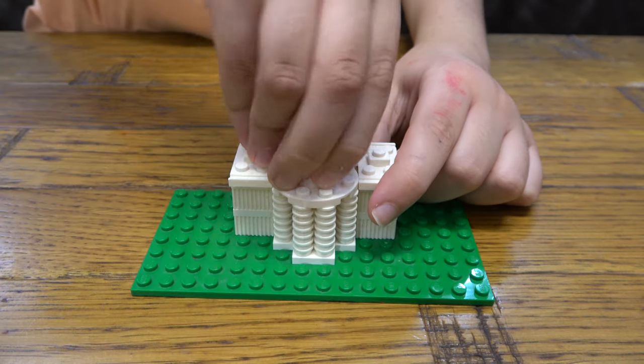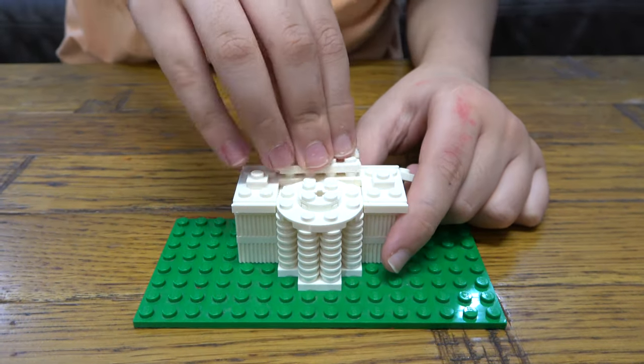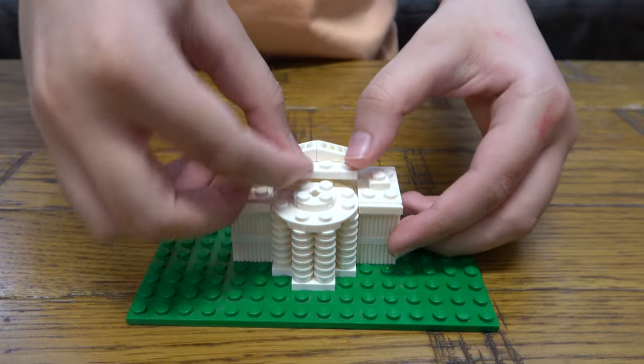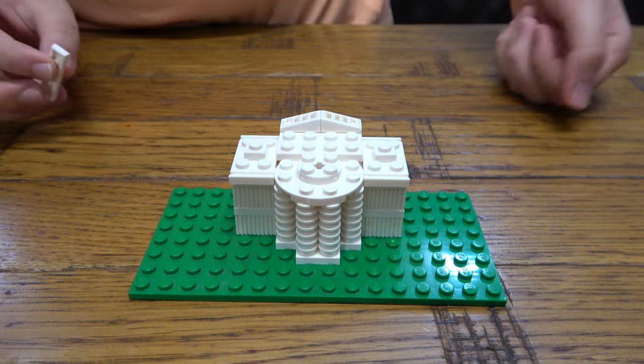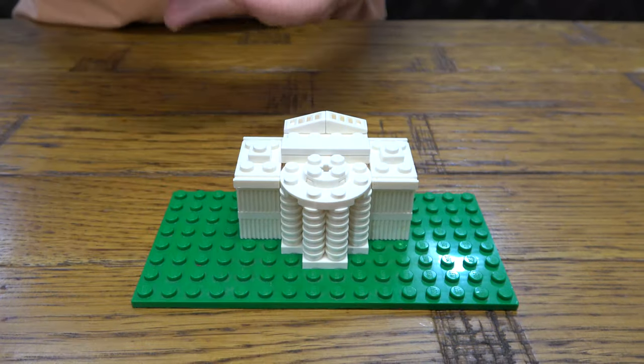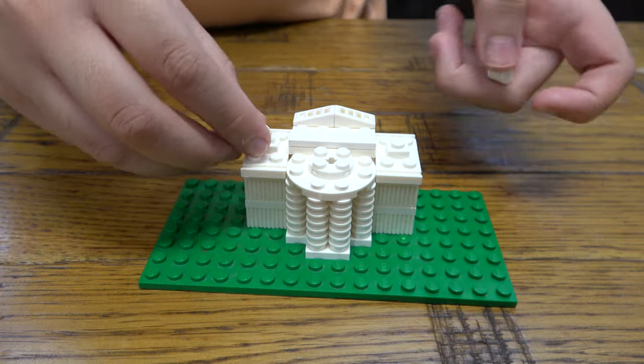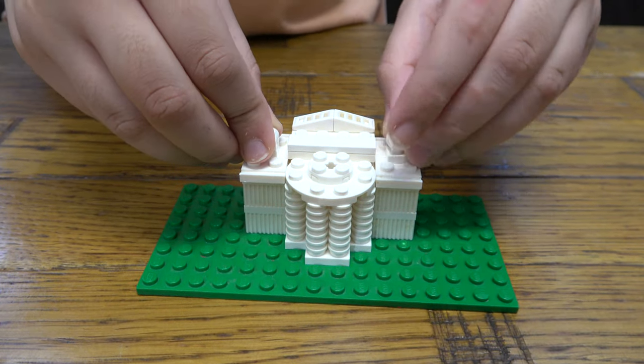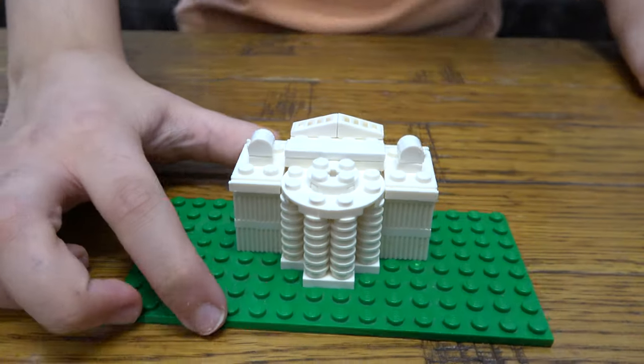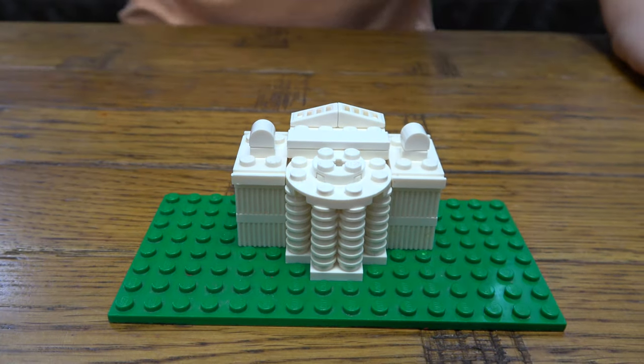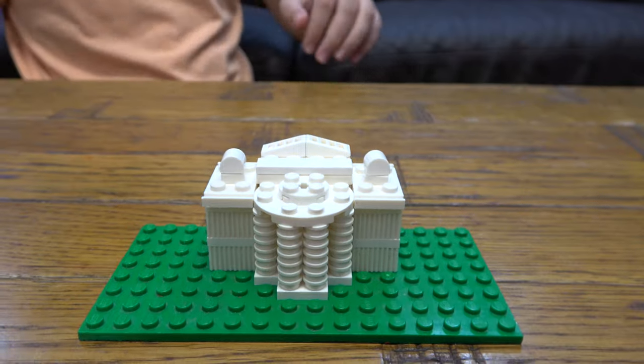We actually get this, place there, and then we place that there like that. Then we place that there and place these two on like so. Here we have the finished Lego White House.